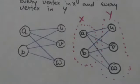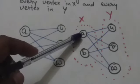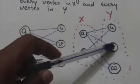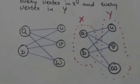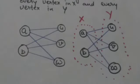There is an edge between every vertex in set X and every vertex in set Y. There is an edge between vertex A and every vertex in set Y, and also there is an edge between vertex B and every vertex in set Y.